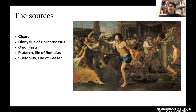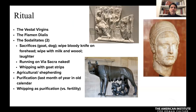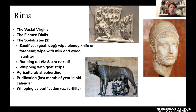The ritual involves the Vestal Virgins, the Flamen Dialis, and the Luperci — selected individuals from society. The Vestals make a sacrifice and the Flamen oversees the rituals. A goat and a dog are sacrificed. When the sacrifice is complete, you wipe the bloody knife on the foreheads of the Luperci members — two groups of twelve. Afterwards, the blood is wiped off the forehead with milk and wool. The required response to getting your face wiped with blood is to respond with laughter, suggesting some ritual function — perhaps warding off bad luck or the evil eye.